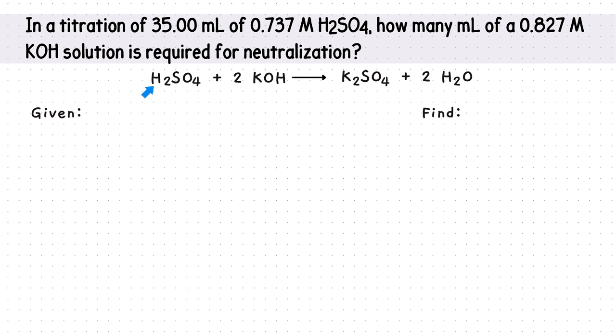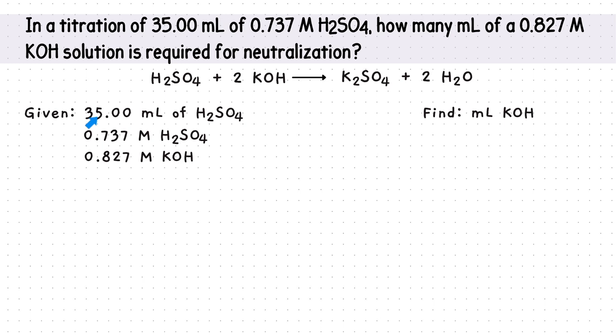Then, identify what we're given and what we're finding. We are given the volume in milliliters of sulfuric acid, the molarity of sulfuric acid, and the molarity of potassium hydroxide. We're finding the volume in milliliters of potassium hydroxide. Recall that the molarity can be rewritten as moles per liter. These will act as some of our conversion factors. Notice, the number given goes with the moles and is set equal to one liter.